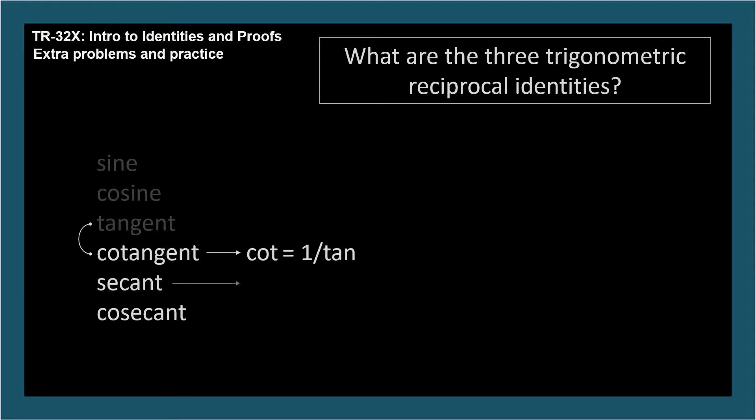Next is secant. It goes with cosine, so secant equals 1 over cosine. Last is cosecant. It goes with sine, so cosecant equals 1 over sine.